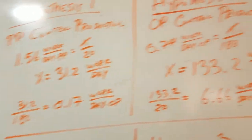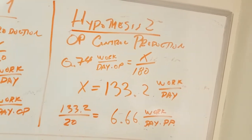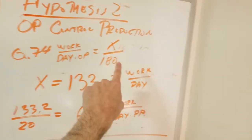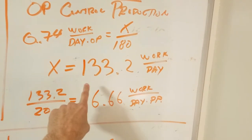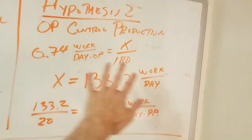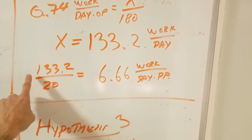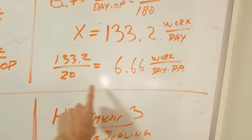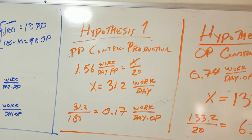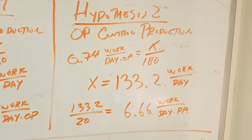Let's take another hypothesis. What if the other people are controlling productivity, meaning that 0.74 work per day per other person is the limiting factor? That means we can solve for X and find that the company is actually producing 133.2 work per day. So we have super linear scaling if these other people are the limiting factor. If those other people are the limiting factor, then the productive people are doing 133.2 divided by 20 or 6.66 work per day per productive person. That's fairly different from hypothesis one. Again, it's super linear scaling here, so we actually get more work as we scale.